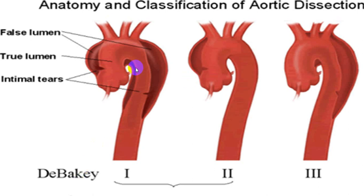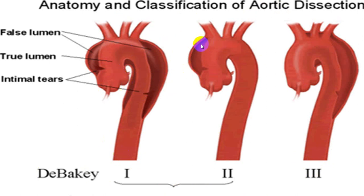In the DeBakey classification: type 1 is dissection involving both ascending and descending aorta; type 2 is only the ascending aortic portion. When dissection goes distally, it is type 3, and in Stanford classification it is type B — distal dissection. Proximal dissection is type A in Stanford. Both DeBakey type 1 and type 2 combined are called Stanford type A, i.e., proximal dissection.